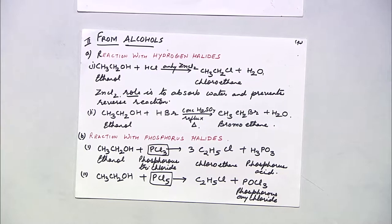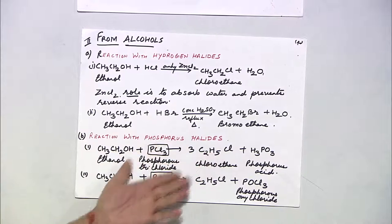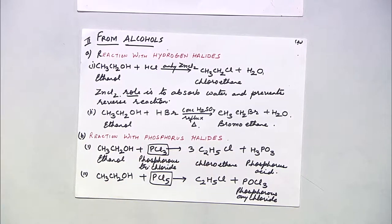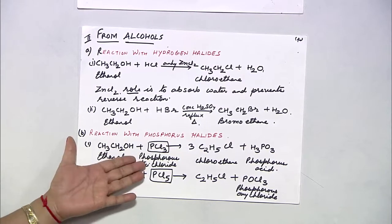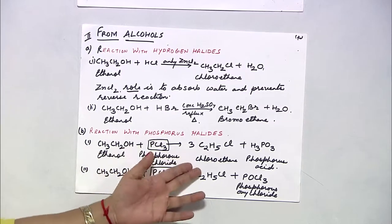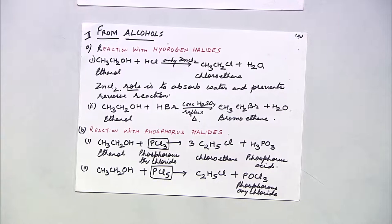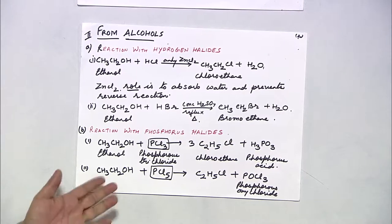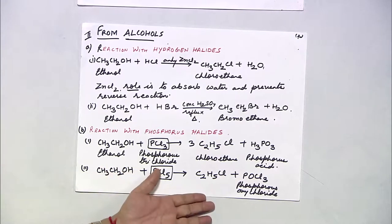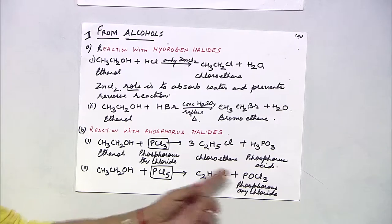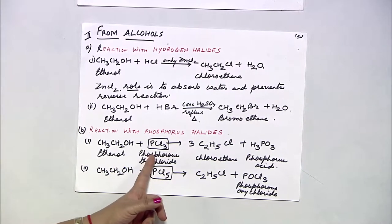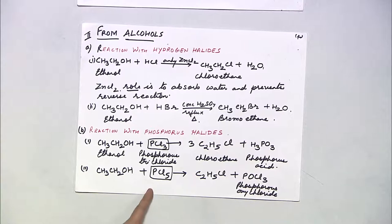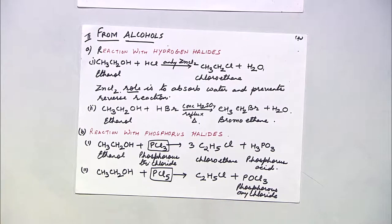Haloalkanes can also be prepared from phosphorus halides — PCl3 and PCl5. Ethanol reacting with PCl3 gives chloroethane, and the other product is phosphorous acid H3PO3. Reacting alcohol with PCl5 also gives chloroethane, but the other product is phosphorus oxychloride POCl3. It is important to remember which byproduct corresponds to which reagent.